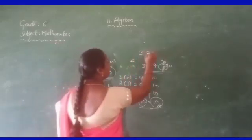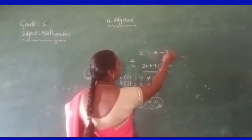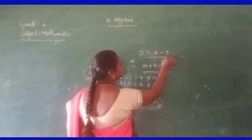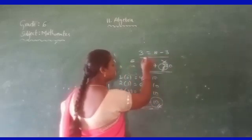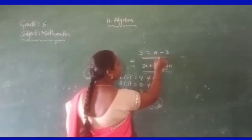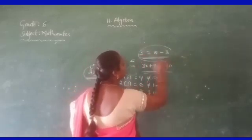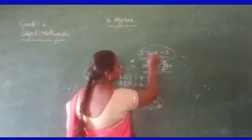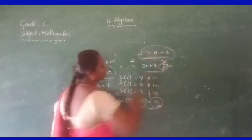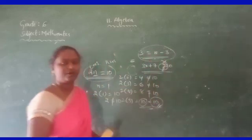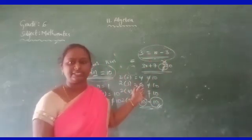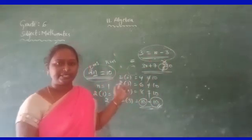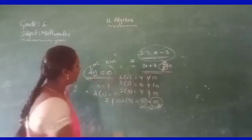Now, 3 is equal to 8 minus 3. Can you say this one is an equation? Yes, it is an equation, but it is a numerical equation — all constants are there, all numbers are there.